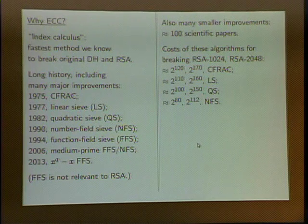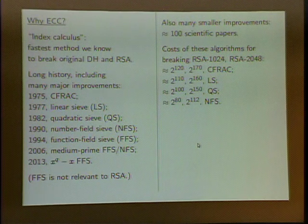To give a numerical example: for RSA with 1024 bits, when the system was designed they understood CFRAC and the linear sieve was just coming out, giving a security level of around 2 to the 110 operations. That's why the government now tells you don't use RSA 1024 anymore. The subsequent algorithms — quadratic sieve, number field sieve — have brought security down to something like 2 to the 80 or 2 to the 112, depending on the size of your RSA key.